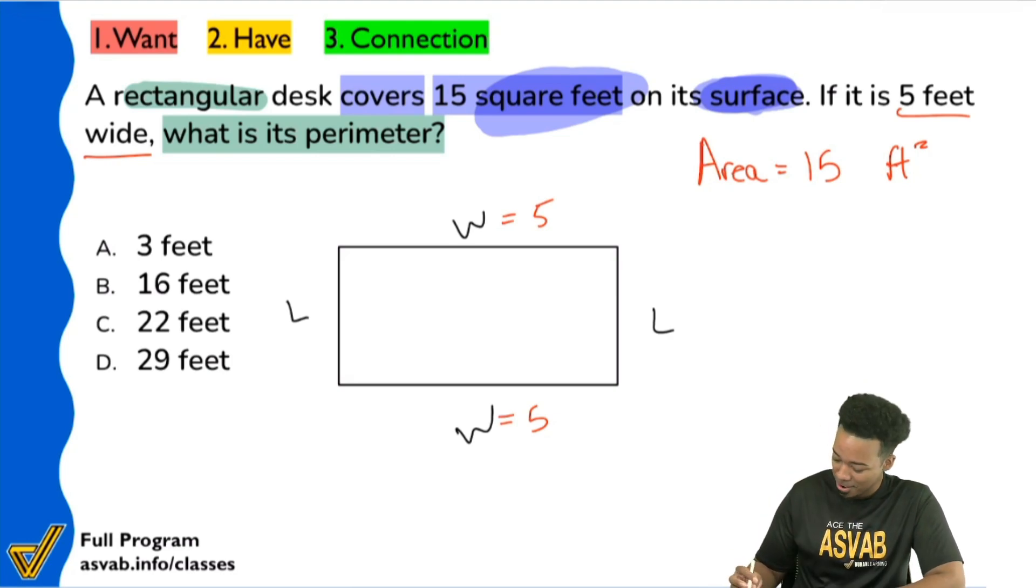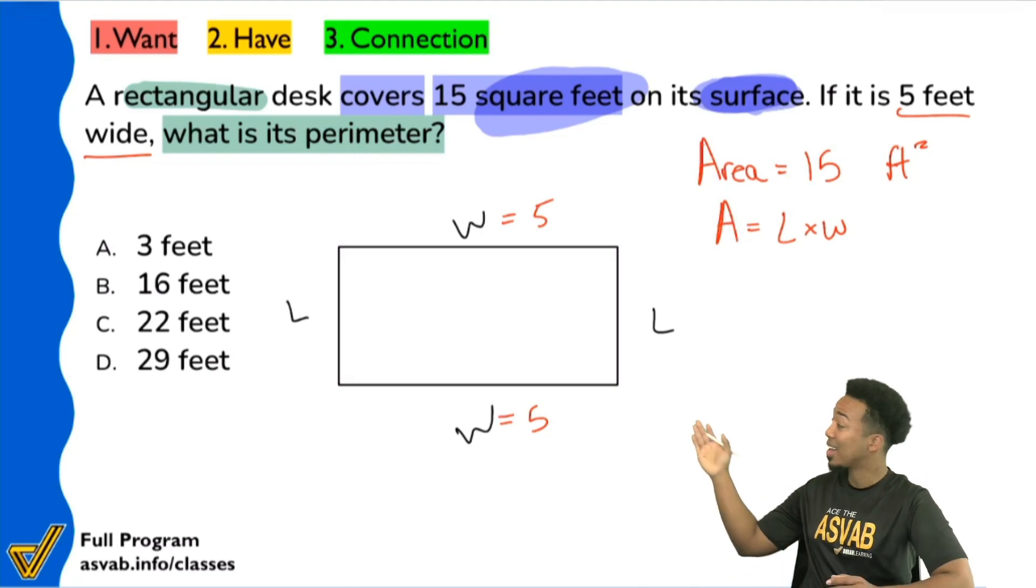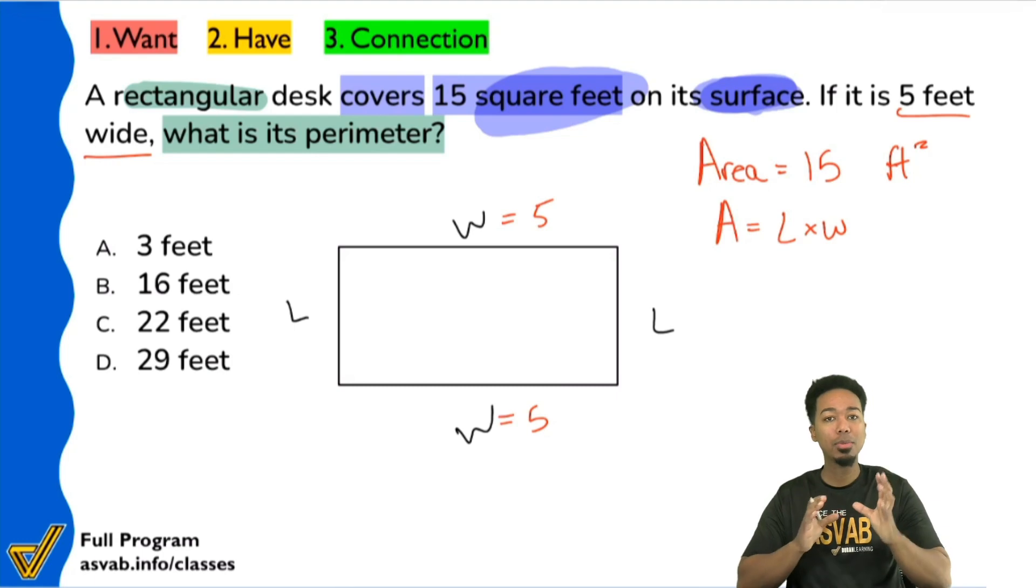So right over here, we're going to have the area being equal to 15. But remember that the formula is length times width for the area. Again, don't forget, this is our formula for area, but what we're truly doing is finding the perimeter. So you have to be able to identify your goal while managing pieces of information. Do you see that?